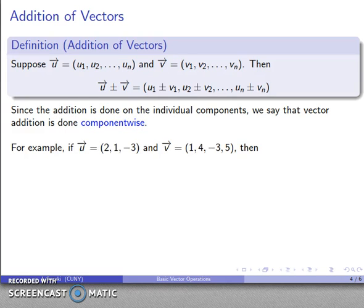So for example, I have my two vectors: (2, 1, -3) and vector v (1, 4, -3, 5). Well, I can't actually add those two vectors.